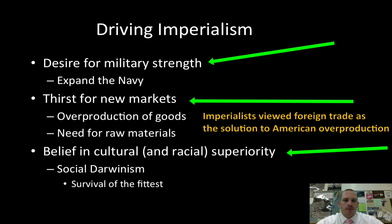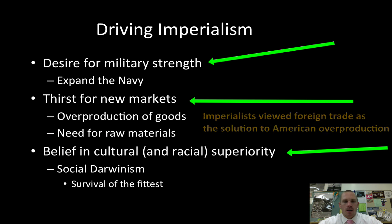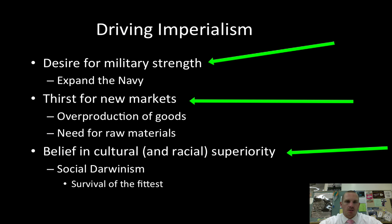The third factor is the belief in cultural and racial superiority. Basically, what we're talking about here is social Darwinism — the survival of the fittest. Also, this cultural superiority includes the idea of Christianizing what they called savage people, especially the Hawaiians and the Filipinos at this point.